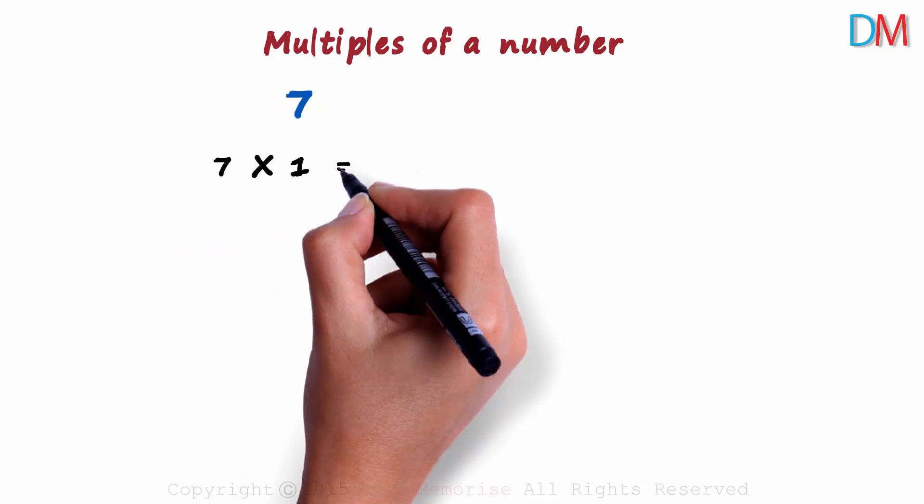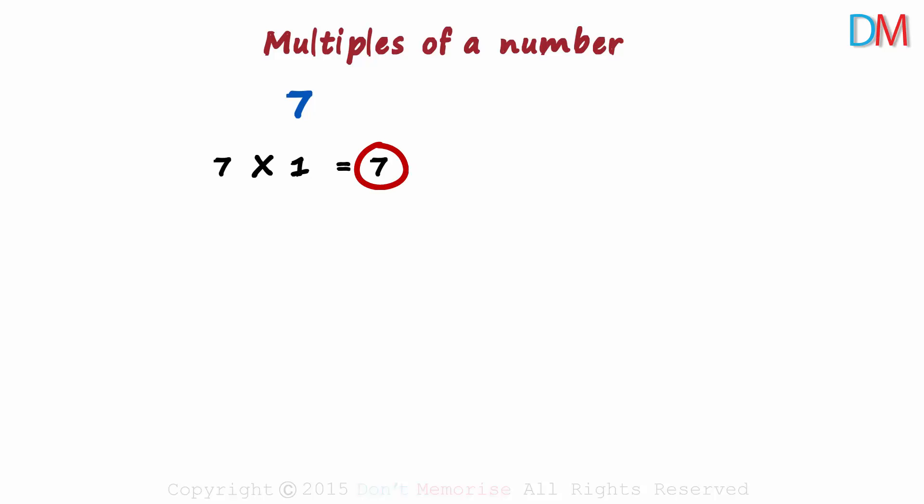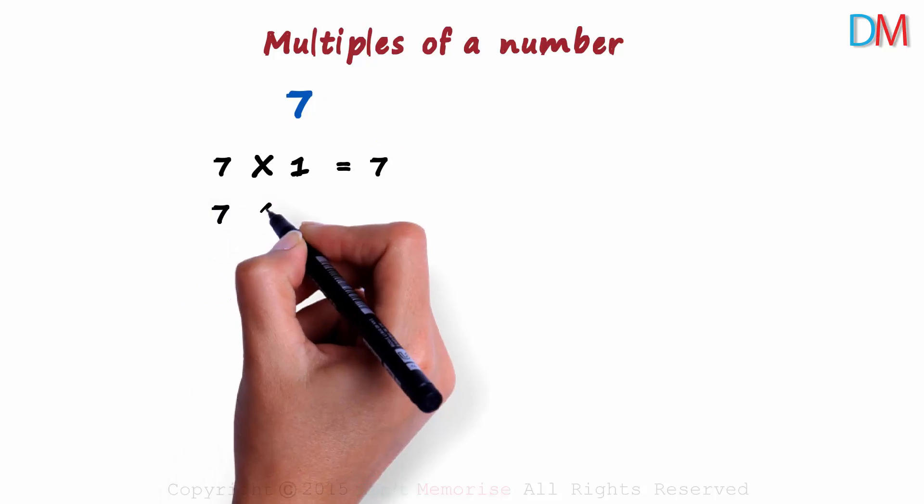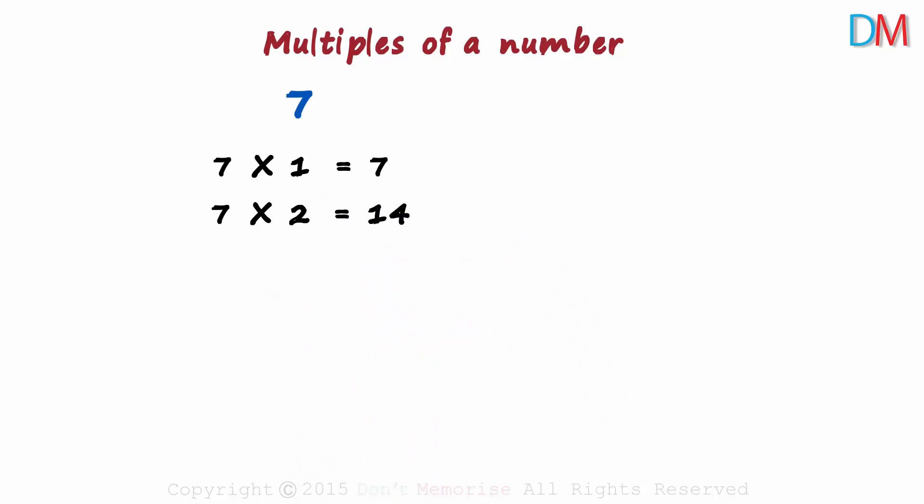7 multiplied by 1 is 7. This 7 is one of the multiples of 7. 7 multiplied by 2 is 14. 14 is another multiple of 7.